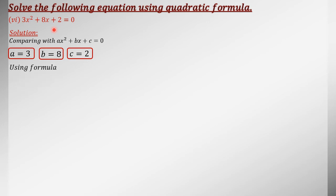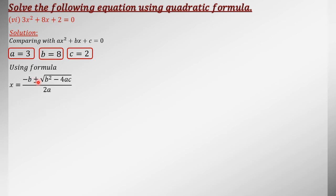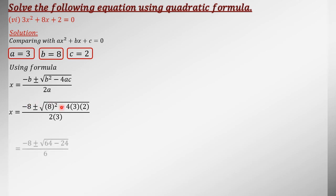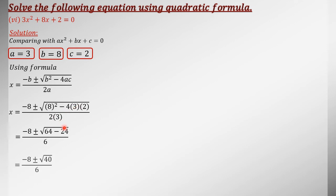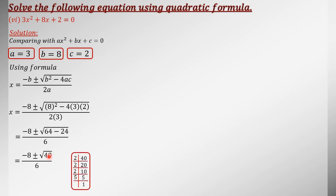A very good thing in this question is that all values are positive — there is no need to worry about negative signs. After writing the formula and putting in the values: b squared is 8 squared equals 64, minus 4 times 3 is 12 and 12 times 2 is 24, divided by 6 — this gives 40 after subtraction. Now, 40 is not a perfect square, but it is also not a prime number.